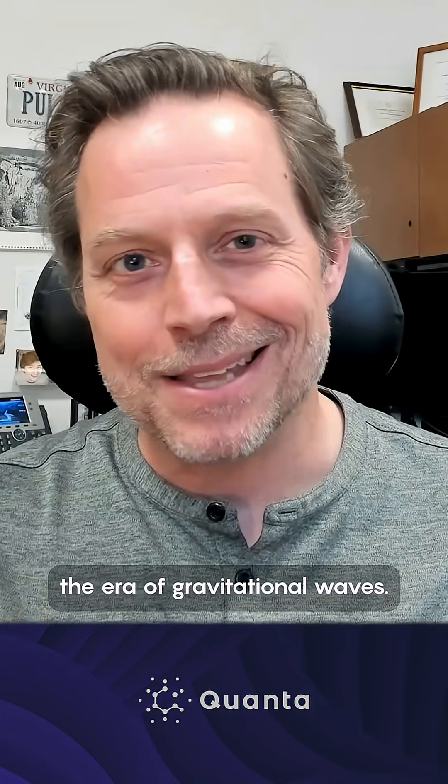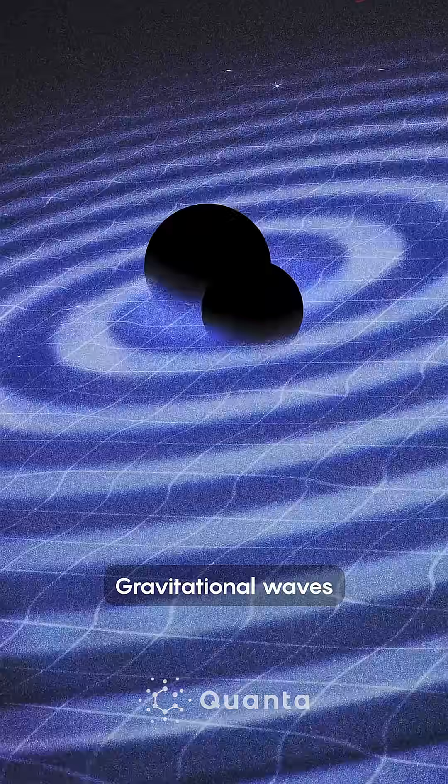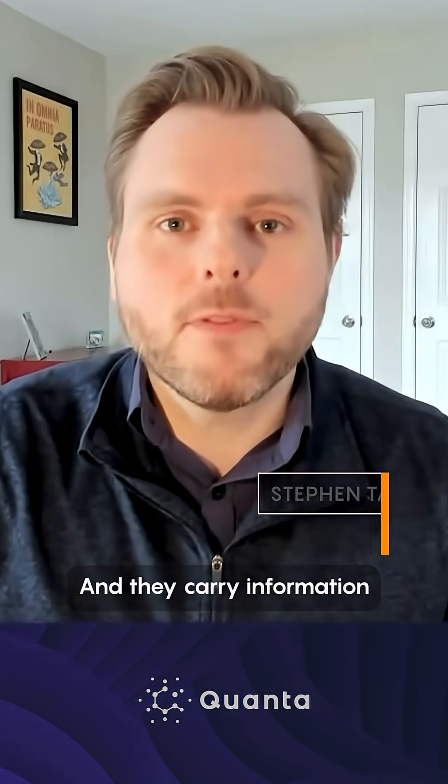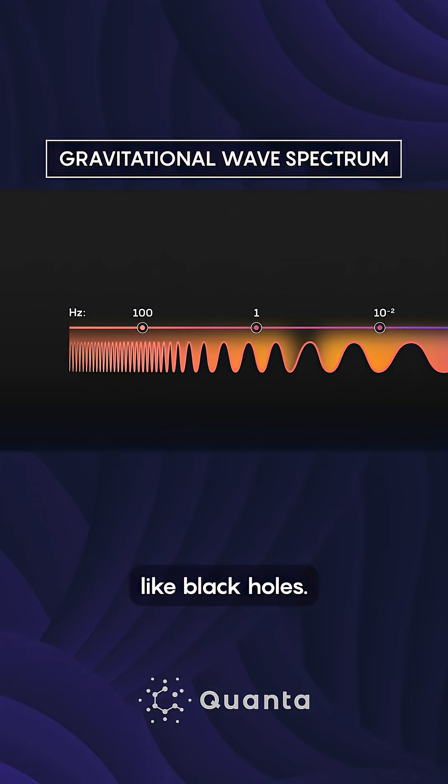We were super happy to be in the era of gravitational waves. Gravitational waves travel at the speed of light, and they carry information about the most extremely relativistic objects in the universe, including objects like black holes.